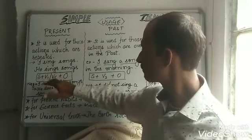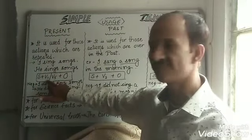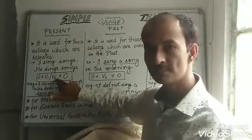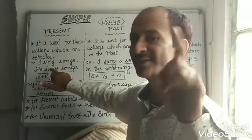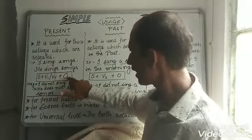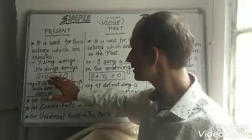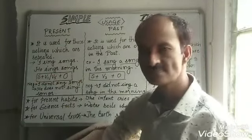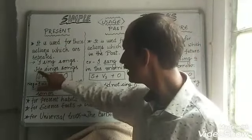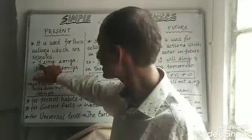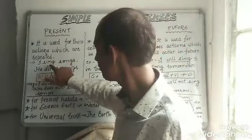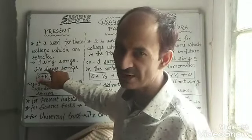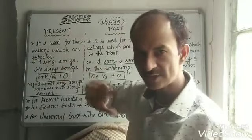So repeated actions take simple present tense. Let's see the structure. That takes the subject along with the first form if the subject is plural, and the fifth form if the subject is singular, along with the object. So that makes it simple present tense. Following the examples: 'I sing songs' or 'he sings songs.' 'I' is plural, so V1. 'He' is singular, so V5, 'sings.'